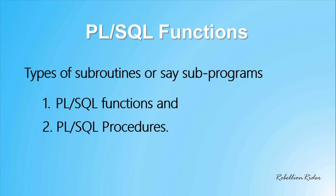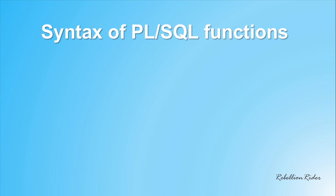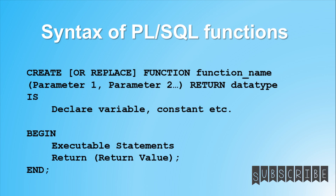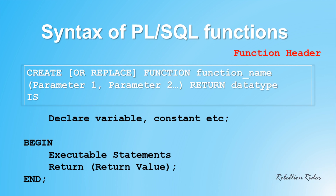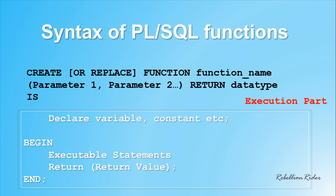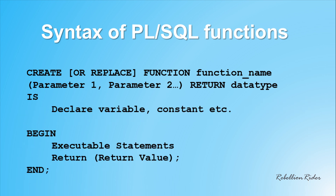So let's take a quick look at the syntax of PL/SQL functions. The syntax of a PL/SQL function is divided into two parts. First is the header of the function, and second is the execution part of the function. The header consists of the signature of the PL/SQL function, and the execution part holds all the executable statements as well as defines the working of your PL/SQL function.